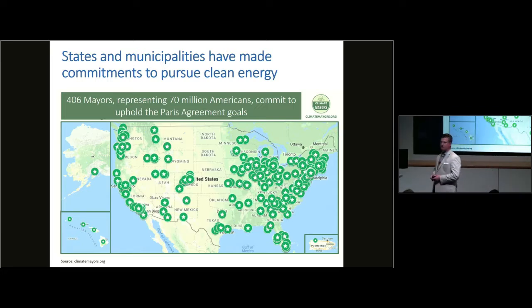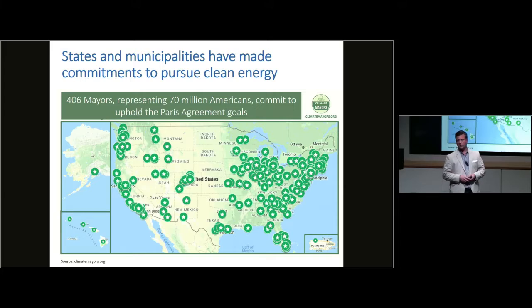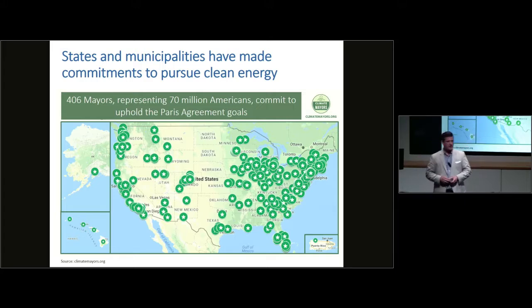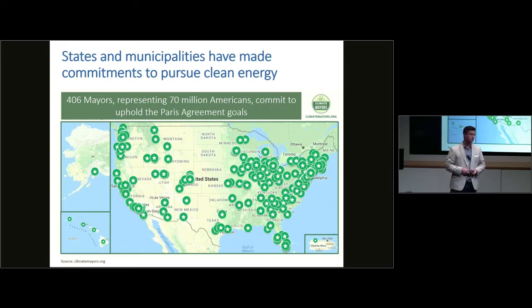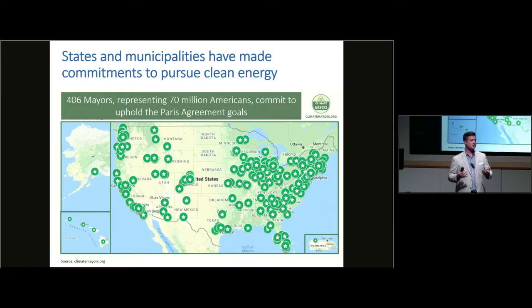We've seen electrification policies as part of a deep decarbonization discussion pop up in states like California, Washington, Oregon, Massachusetts, and elsewhere — even in Canada's province of Ontario as part of its long-term energy plan. Also, in localities and cities across the country, mayors are signing 100% clean energy agreements, motivated by the feeling that the federal government has not stepped up with its leadership, and so states and localities have filled that policy gap.